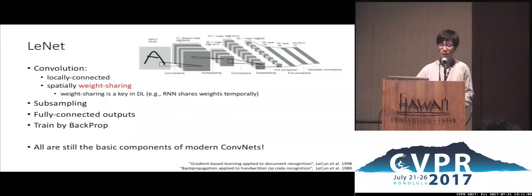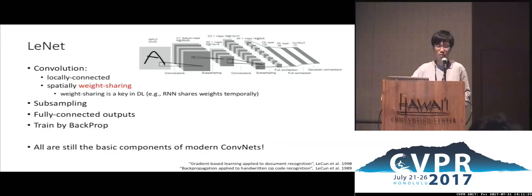In LeNet, the network ends with fully connected layers. The last layer can be thought of as a linear classifier similar to an SVM. The entire architecture can be trained end-to-end by backpropagation. All these components are still the key components in modern CNNs.